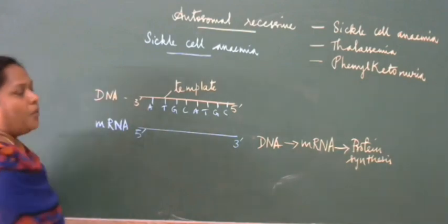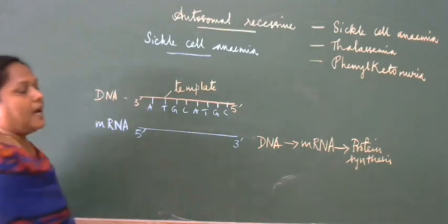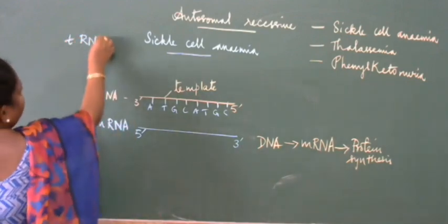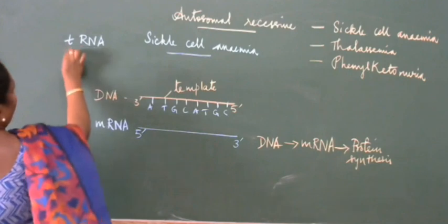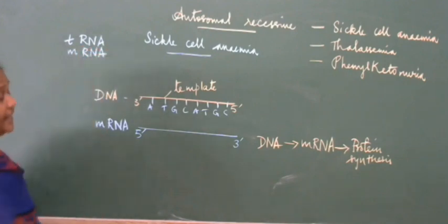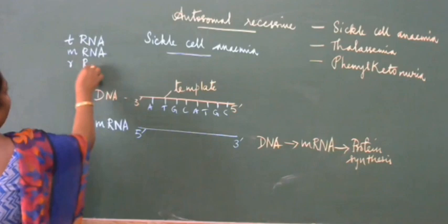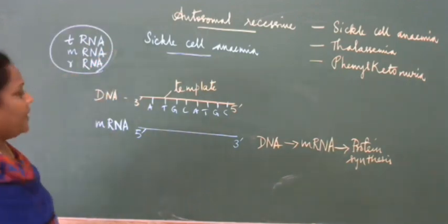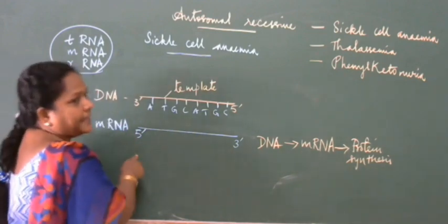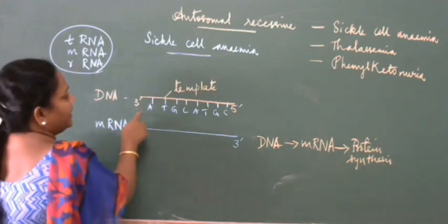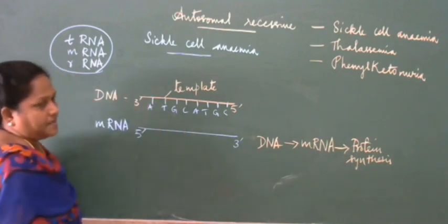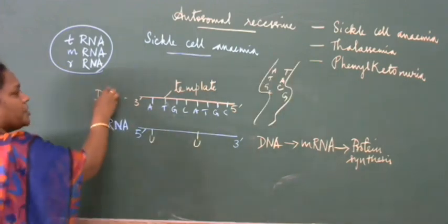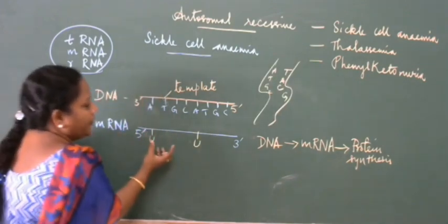There are three types of RNA: tRNA (transfer RNA), mRNA (messenger RNA), and rRNA (ribosomal RNA). The difference between DNA and RNA is that in DNA you have adenine, thymine, guanine, and cytosine; but in RNA, instead of thymine, uracil is present. The information from DNA is copied to RNA.